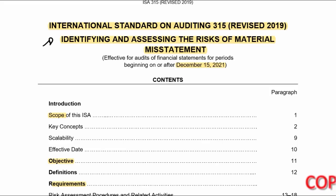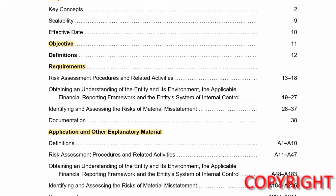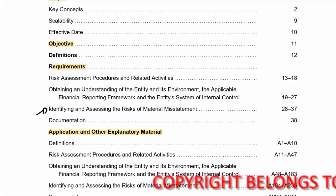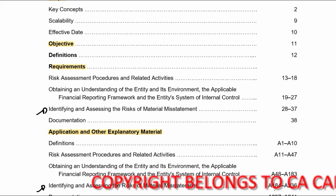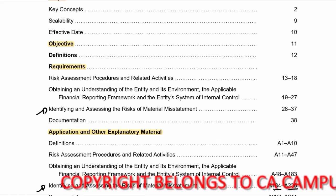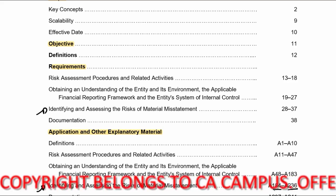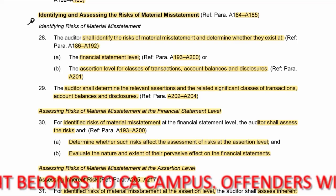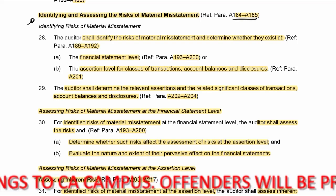ISA 315, and we go down to the requirements — identifying and assessing the risks of material misstatement, paragraphs 28 to 37. Under the applications guidance it's A184 to A236 — it's massive. Let's start by going to paragraph 28, identifying and assessing the risks of material misstatements. I've already highlighted A184 to A185.